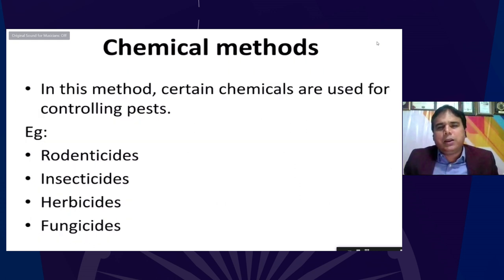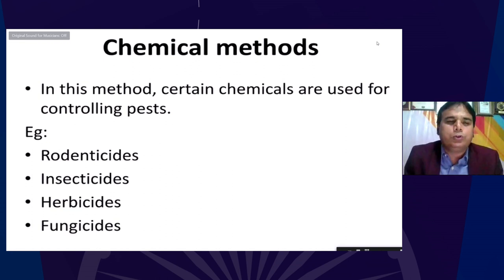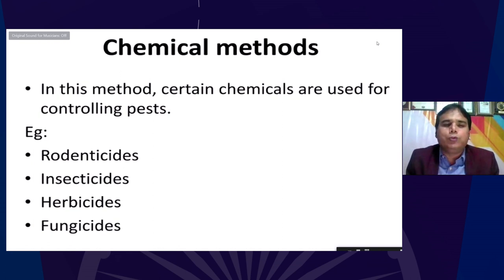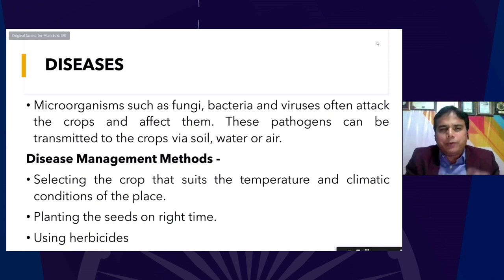There is also the chemical method, where certain chemicals are used for controlling pests. Rodenticides are used to control the population of rodents; insecticides are used to control insect populations; herbicides are used to kill herbaceous plant populations; and fungicides are used for controlling fungus population. These are the different ways to control the population of various unwanted insects and pests.